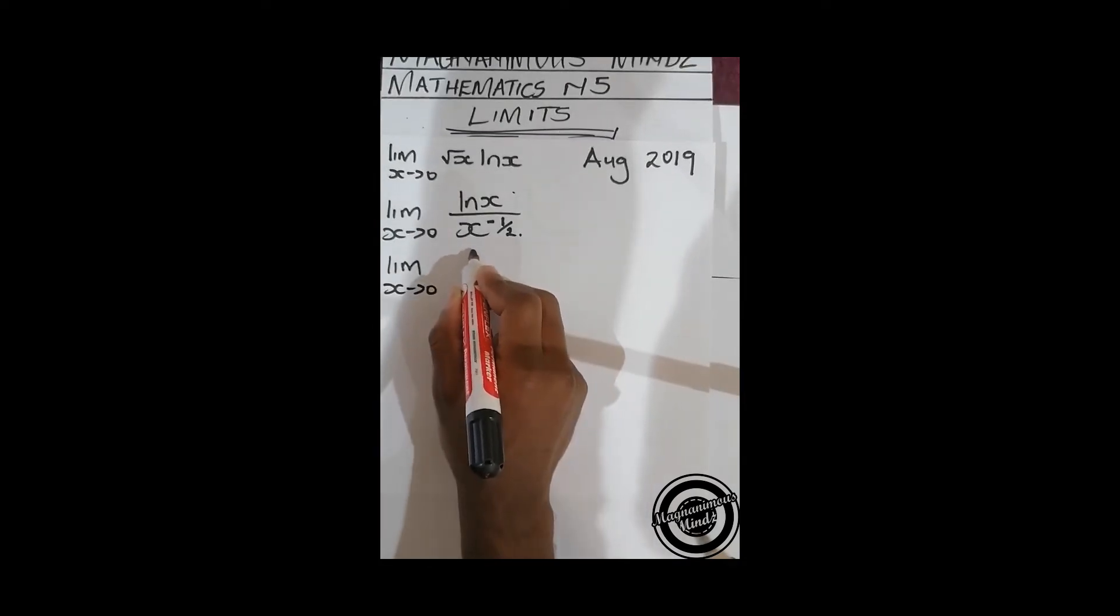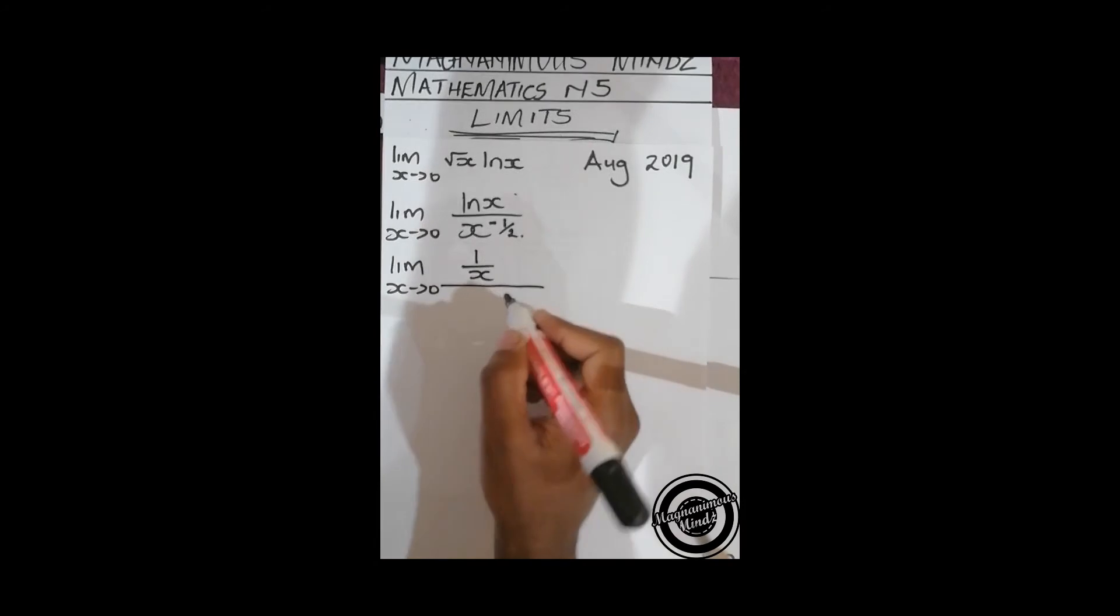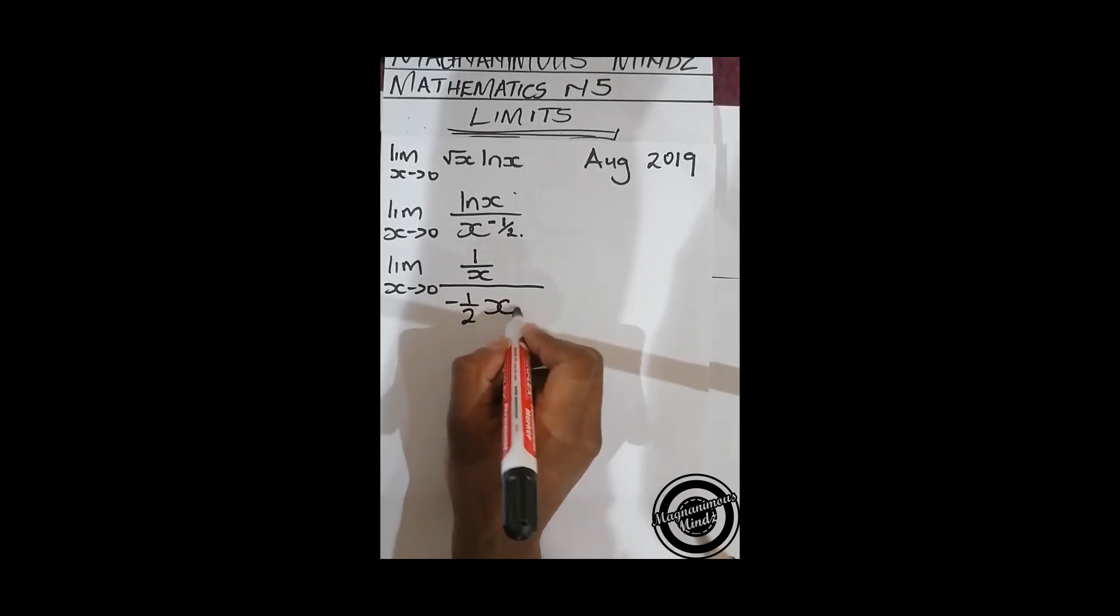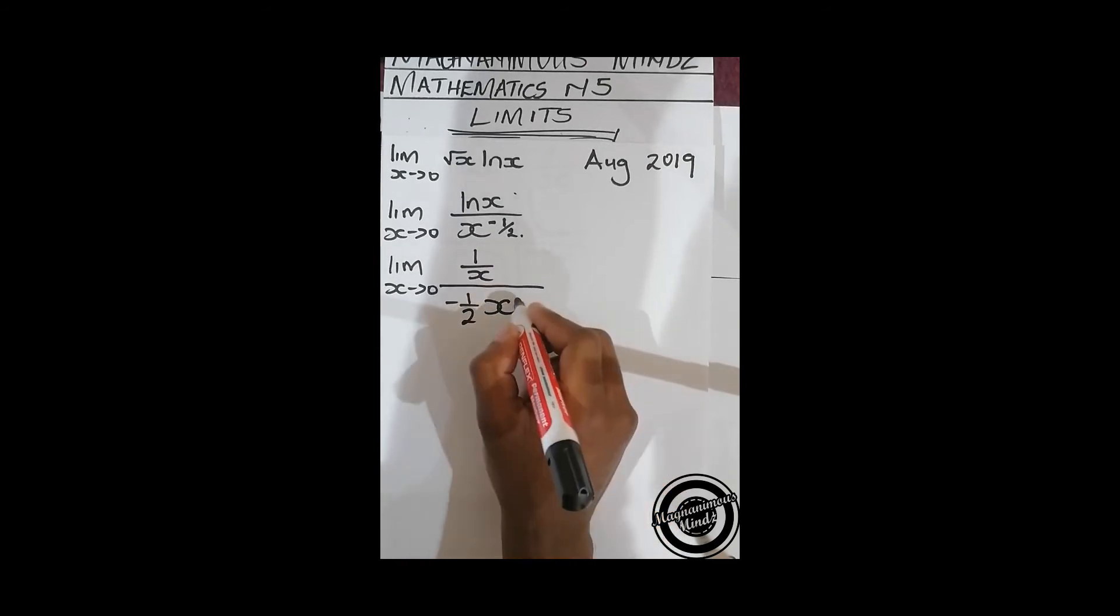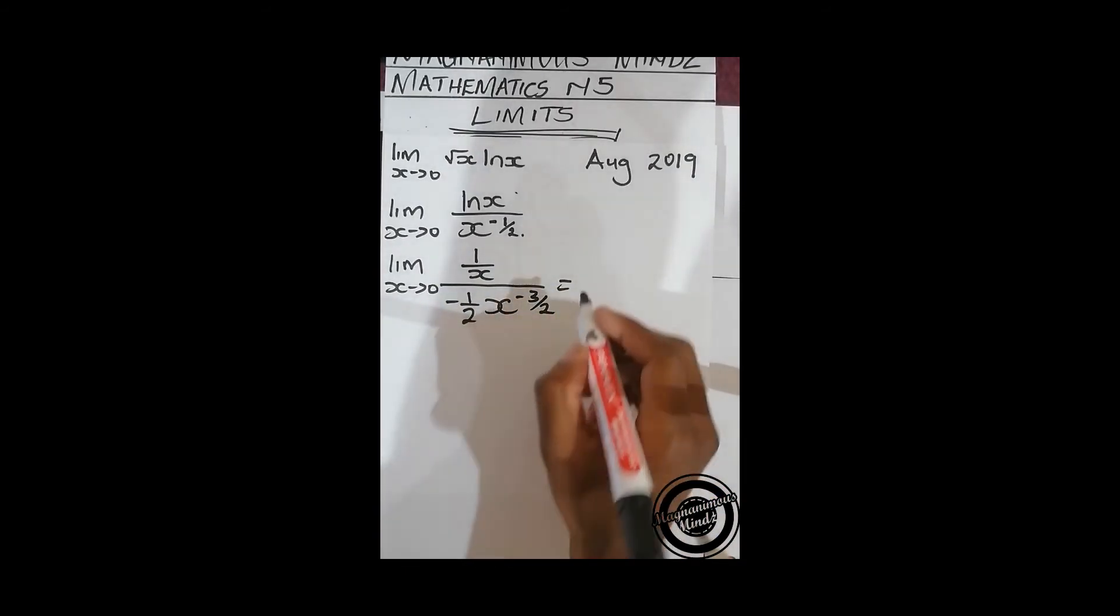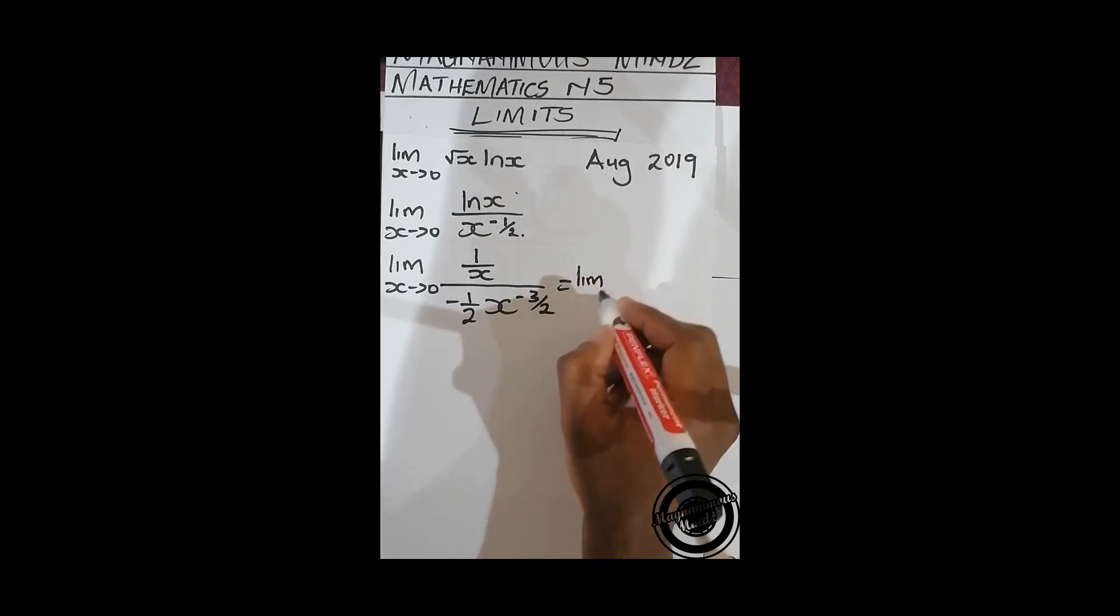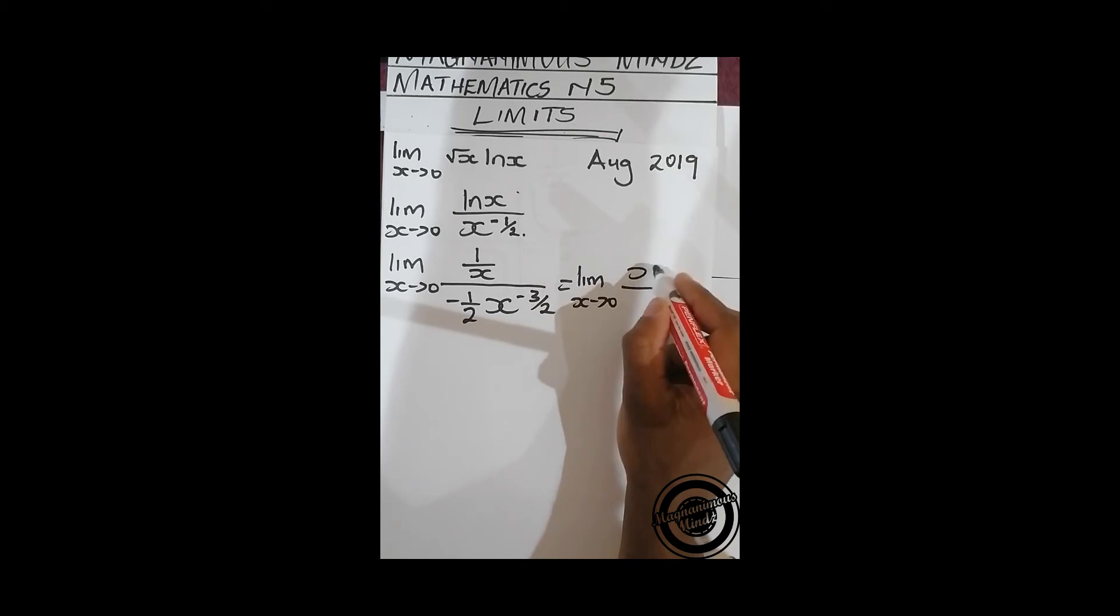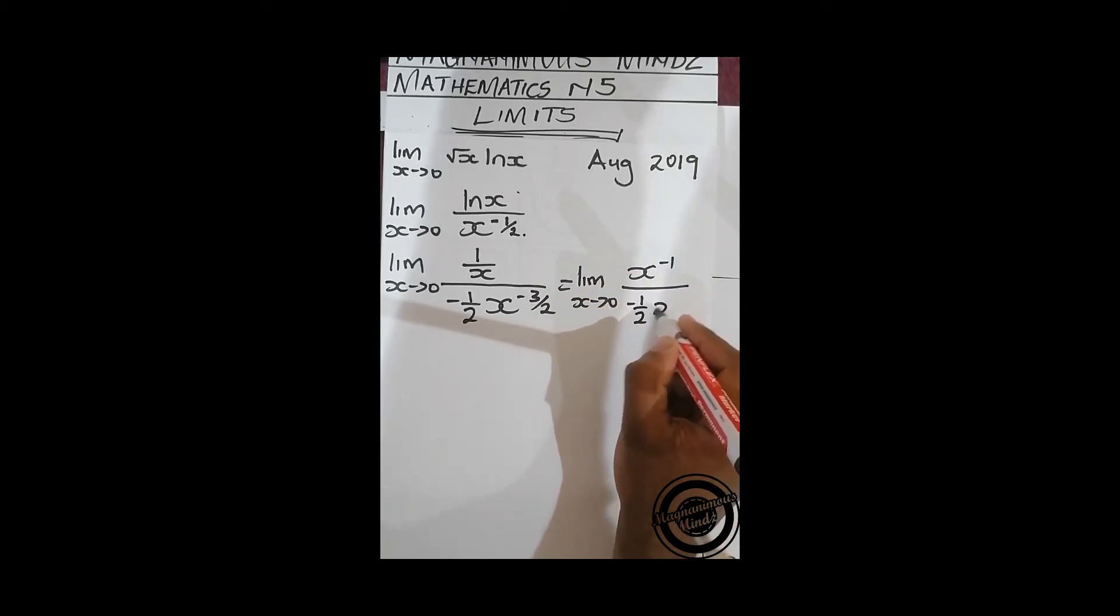Differentiating ln x gives us 1/x. This is going to give us negative 1/2 times x to the power negative 1/2 minus 1, which is negative 3/2. Then we further simplify. This is going to be lim x approaching zero, 1/x divided by negative 1/2 x to the power negative 3/2.